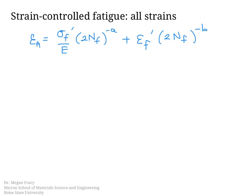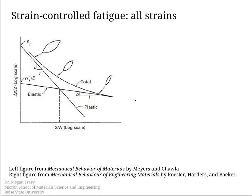This plot shows the strain amplitude on a log scale versus 2N_F also on a log scale. One line represents the elastic contribution and another represents the plastic contribution. We observe that the overall data essentially follows one and then transitions to follow the other. At high strains and a small number of cycles, plastic strain dominates — this is the region of low cycle fatigue where plastic deformation is important.